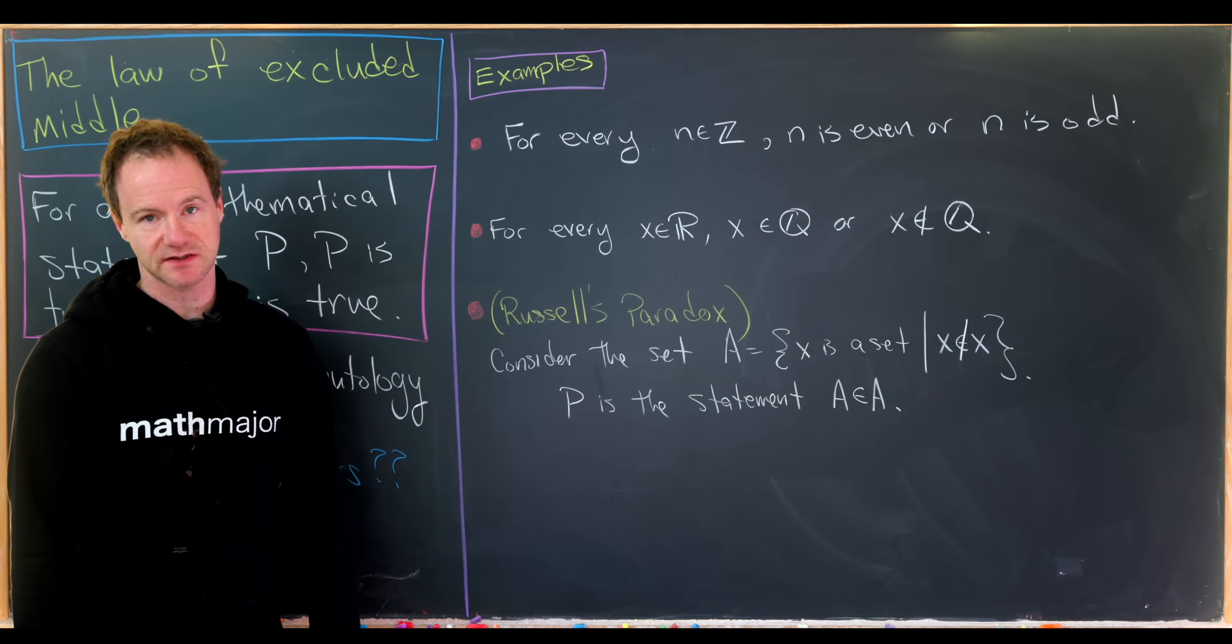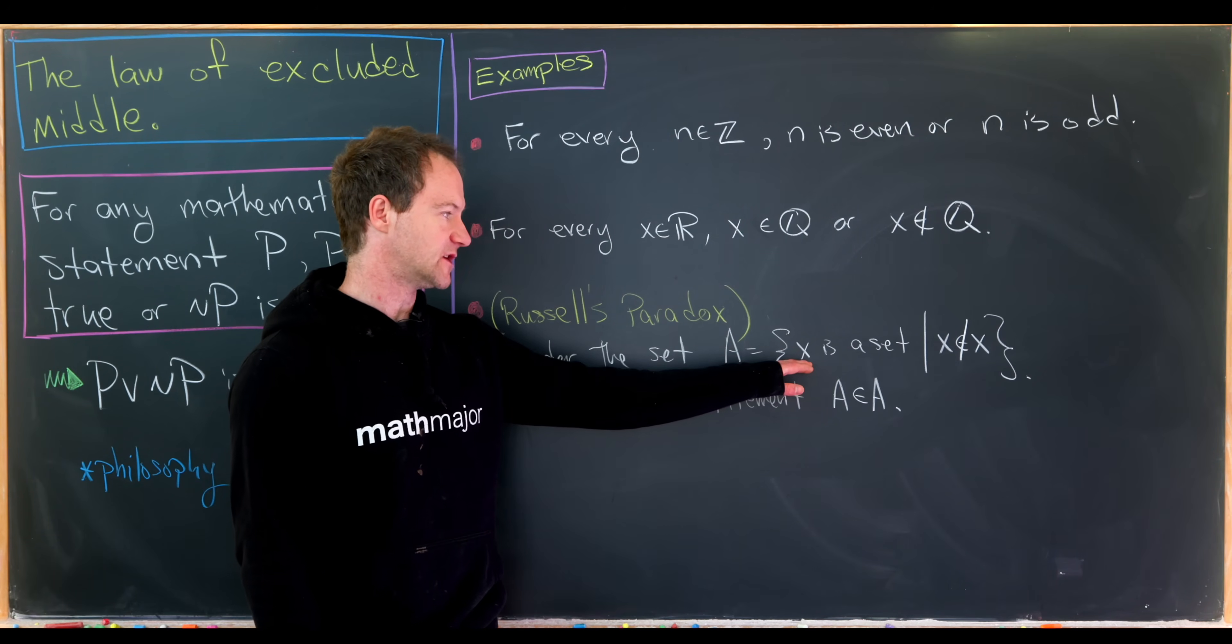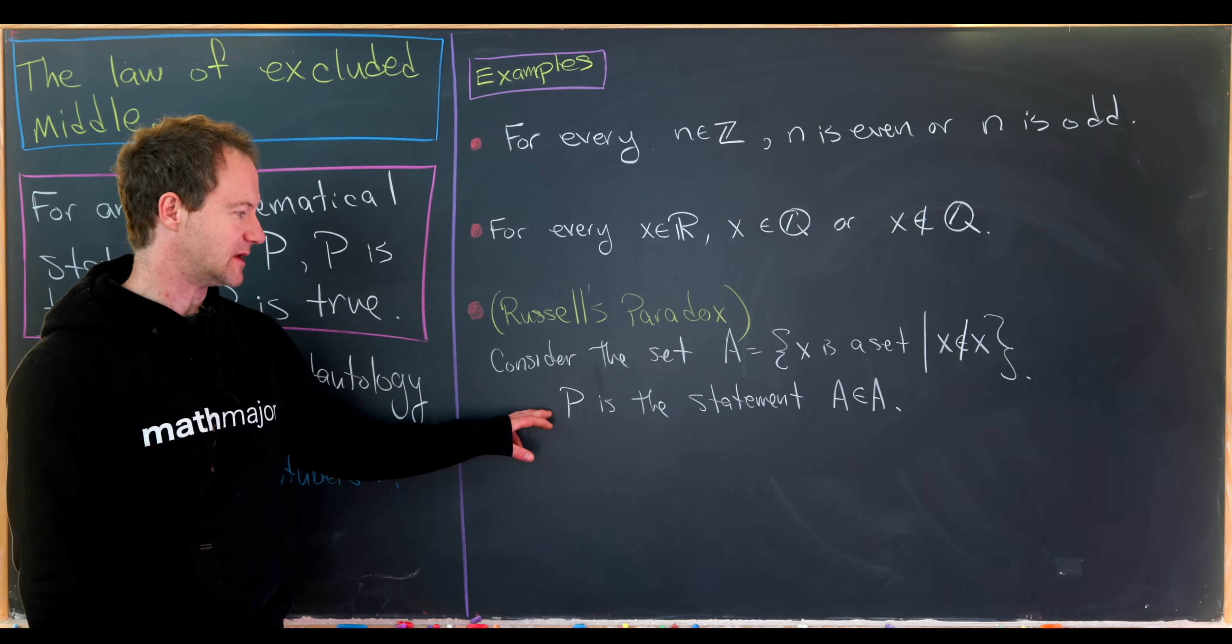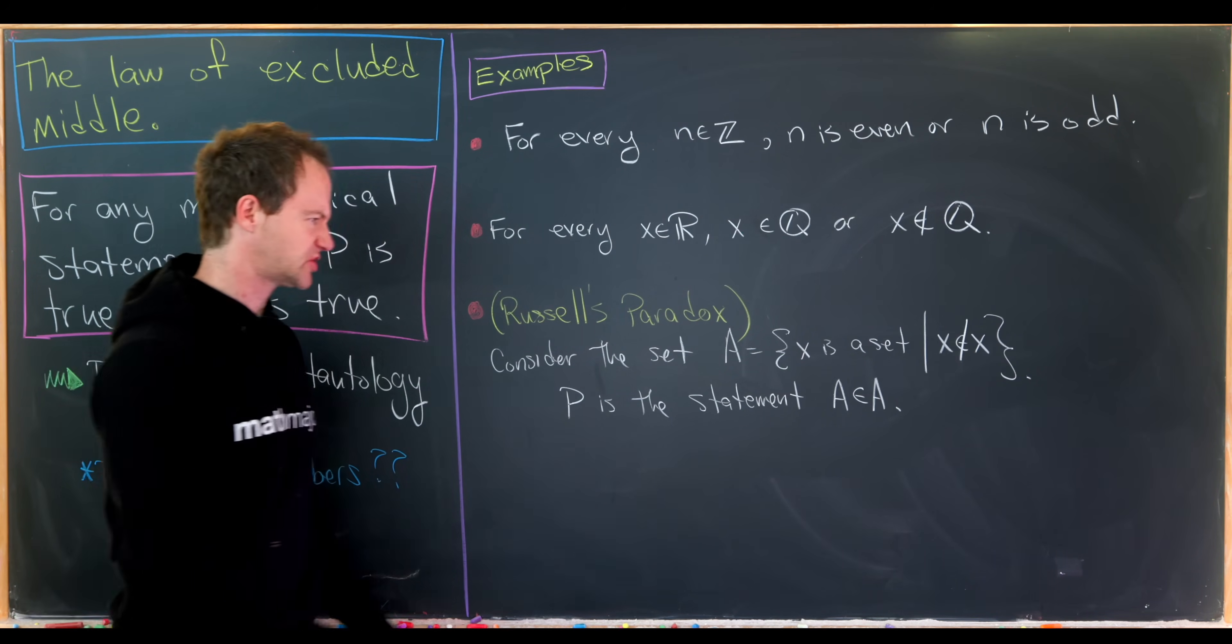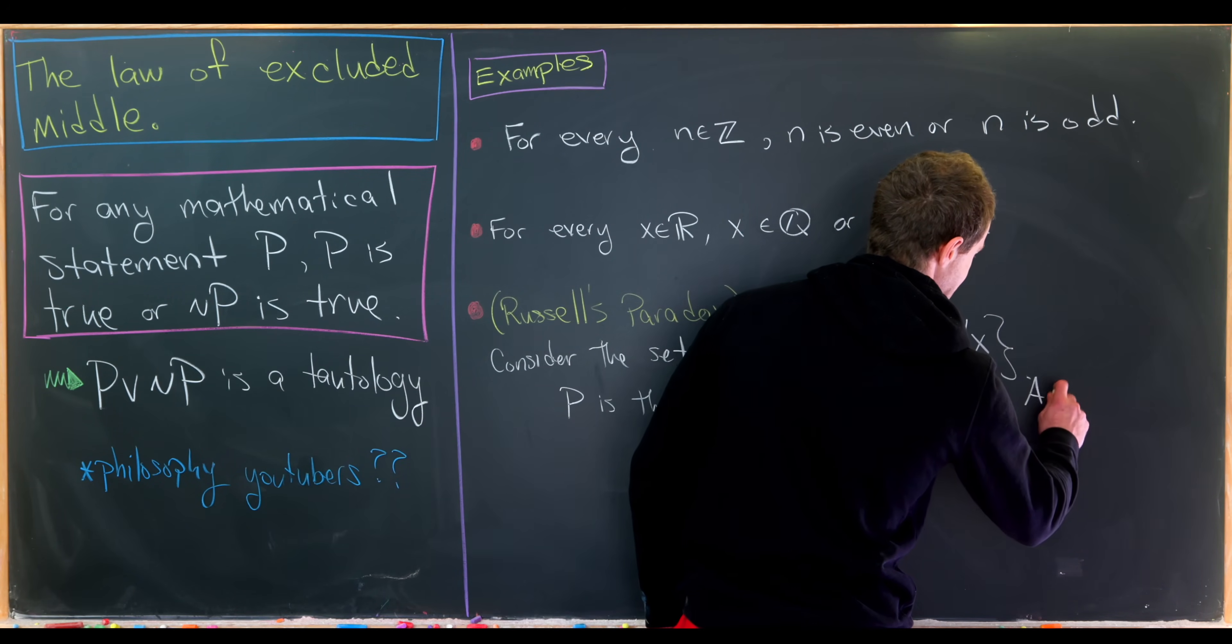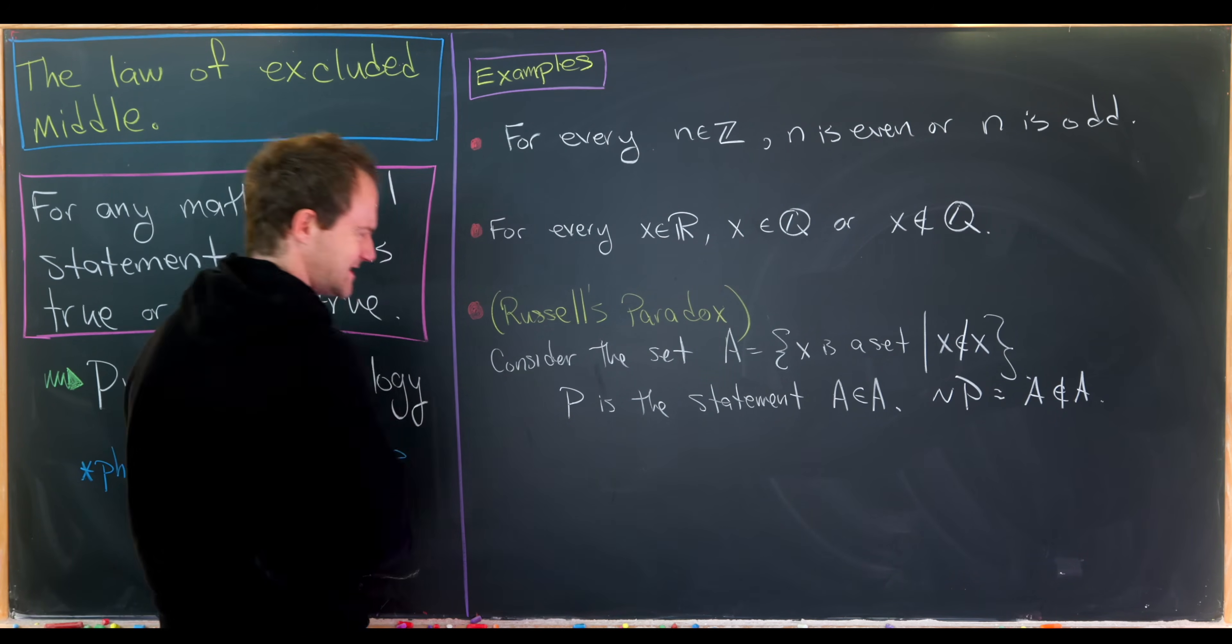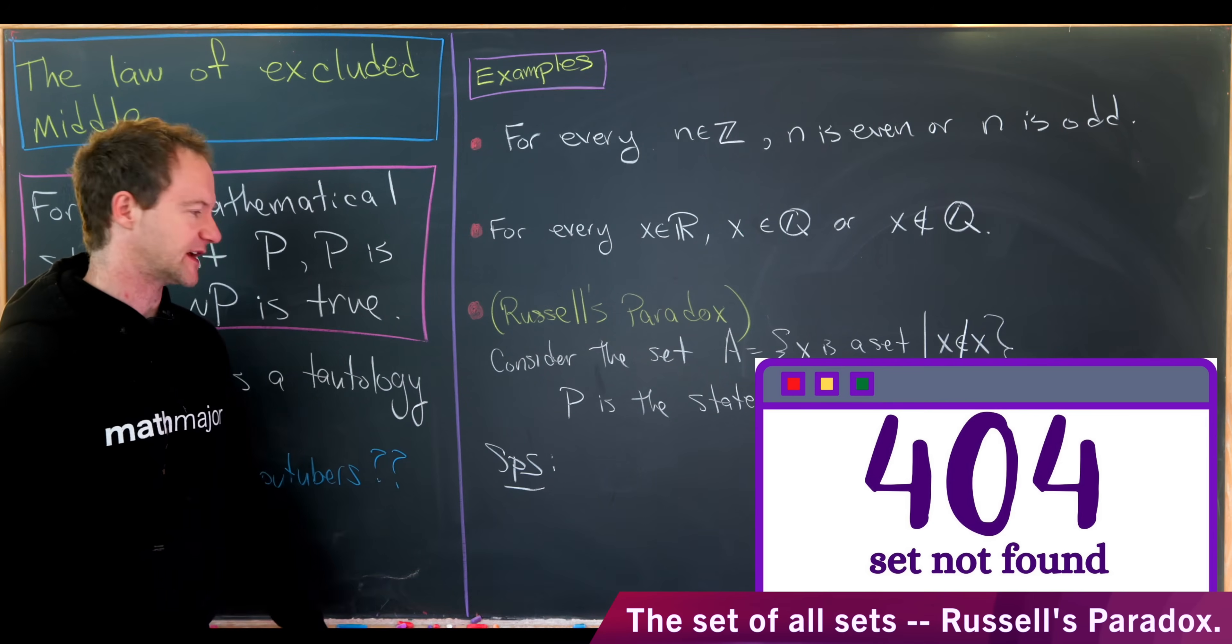It's called Russell's Paradox and it involves considering a set A, which is defined as the set of all sets x, where x is not an element of itself. And then after considering that object, we consider the statement P, which is A is an element of A. Which tells us that the statement not P is the statement A is not an element of A. And remember the law of excluded middle should say that one of these is true. So let's see maybe how this goes wrong. And I've done this on the channel before in more depth if you'd like to check that video out.